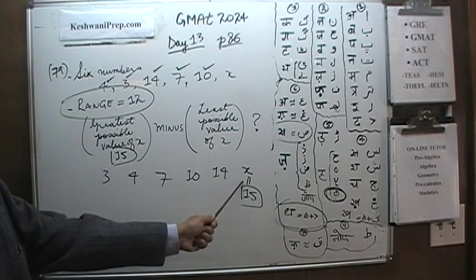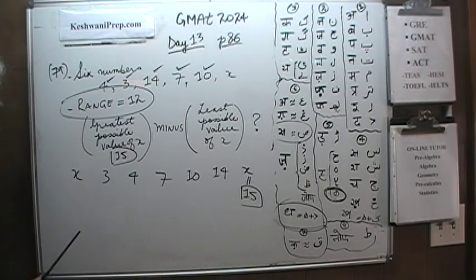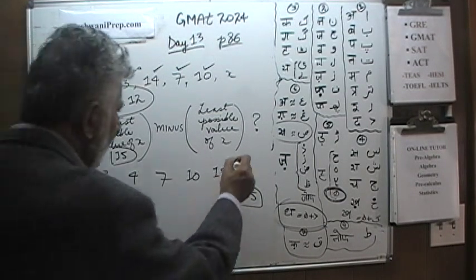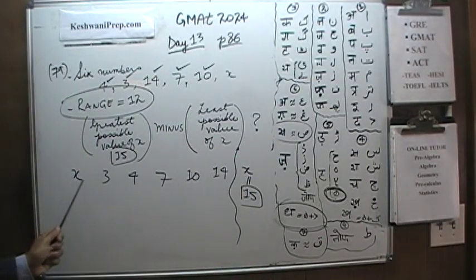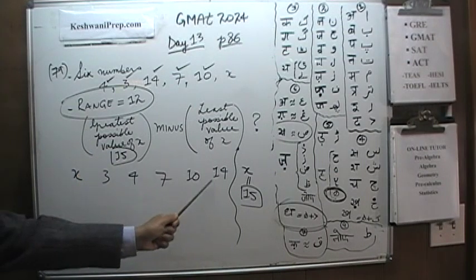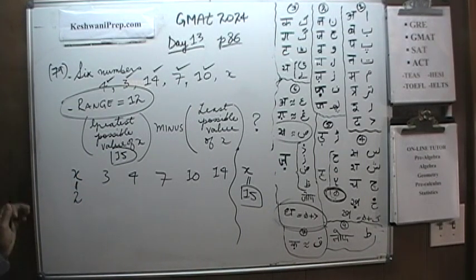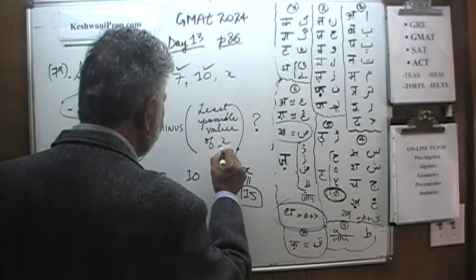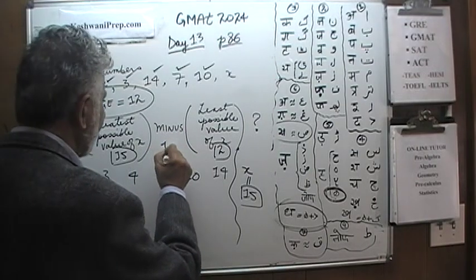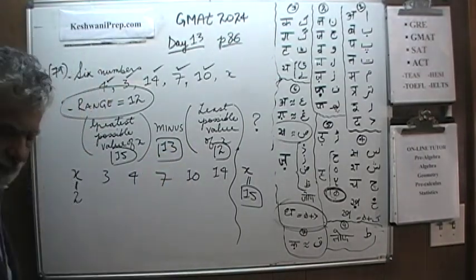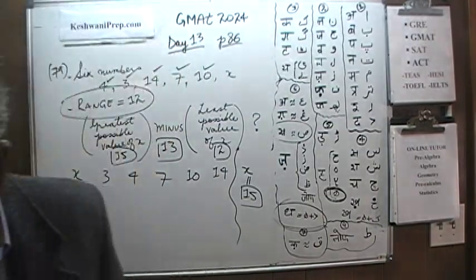The other possibility is that X goes on the low end. If X is the minimum and we're dealing with 14 as the maximum, and the range has to be 12, then X would have to be 2. That's the smallest possible value. The difference between 15 and 2 is 13. That's our answer.